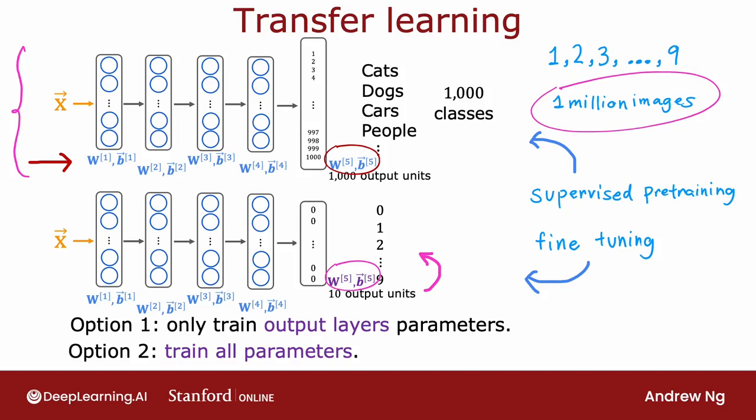One nice thing about transfer learning as well is maybe you don't need to be the one to carry out supervised pre-training. For a lot of neural networks, there will already be researchers that have already trained a neural network on a large image and will have posted trained neural networks on the internet, freely licensed for anyone to download and use. And what that means is rather than carrying out the first step yourself, you can just download a neural network that someone else may have spent weeks training and then replace the output layer with your own output layer and carry out either option one or option two to fine tune a neural network that someone else has already carried out supervised pre-training on and just do a little bit of fine tuning to quickly be able to get a neural network that performs well on your task.